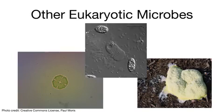In addition to fungi, other microbial eukaryotes also exist. Many of these are called protozoa and include organisms such as primitive algae on the bottom left, amoebas on the top, and slime molds on the bottom right.